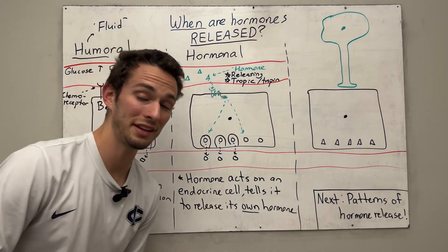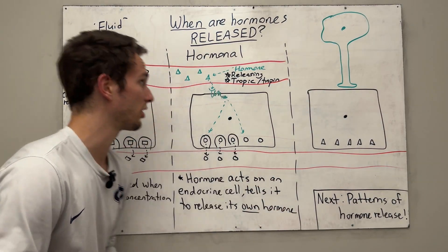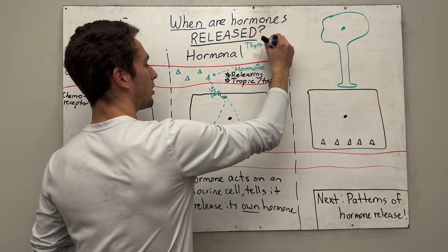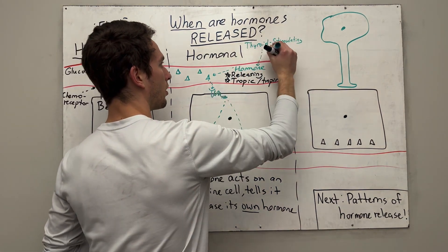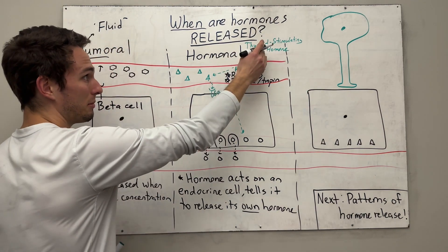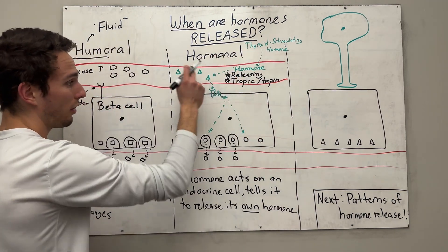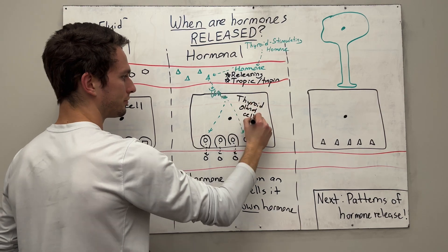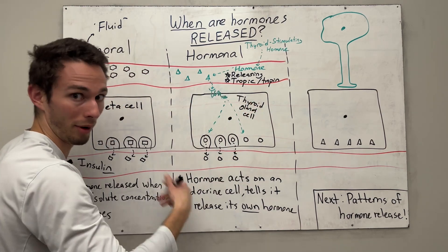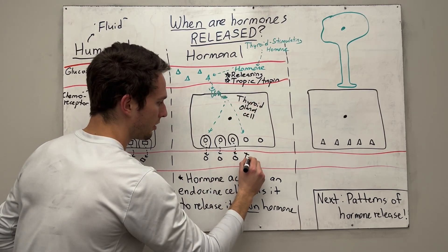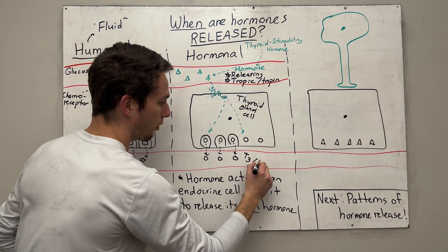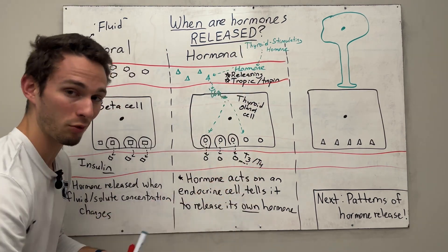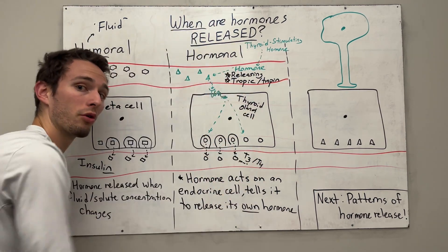So what's an example of this? Well, the anterior pituitary gland releases a hormone called thyroid stimulating hormone. As you can guess, thyroid stimulating hormone — or TSH for short — will act on the thyroid gland and tell it to release its own hormone, that being T3 or T4. So the stimulating hormone stimulated the thyroid to release T3 and T4. Therefore, this is a hormonal control.